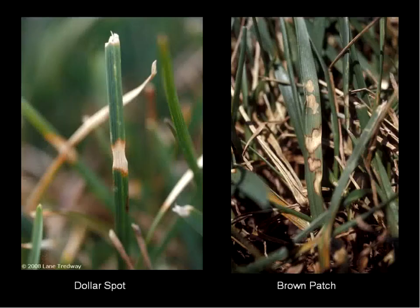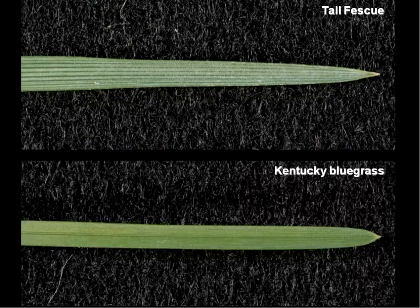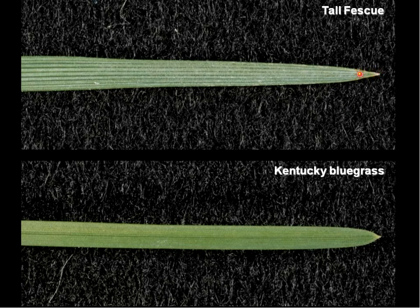When you look at dollar spot and brown patch lesions up close, they're very easy to confuse for one another. A typical dollar spot lesion on a Kentucky bluegrass plant looks very similar to brown patch lesions on tall fescue — subtle differences, but to the average person they look the same. The key thing I recommend is learning how to identify the different grasses. Tall fescue has much deeper ridges on the foliage compared to Kentucky bluegrass, a much sharper saber-type tip, whereas Kentucky bluegrass has a canoe or boat-shaped tip. It also tends to be shinier on the backside and has a midrib. These are things you can find in guides online.